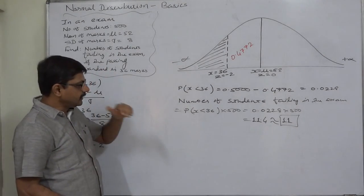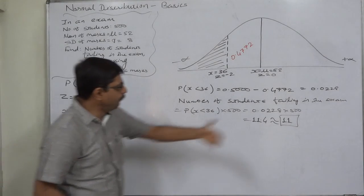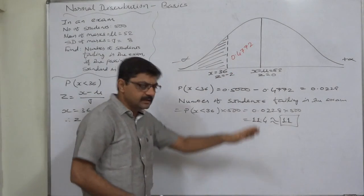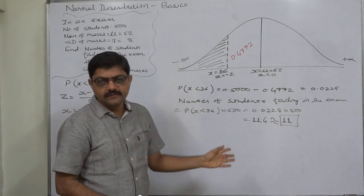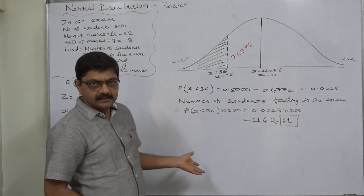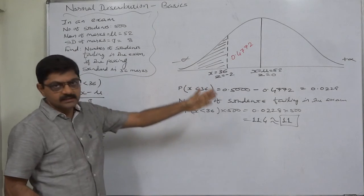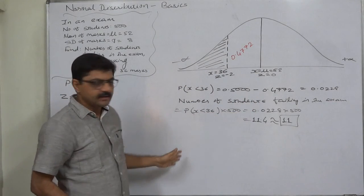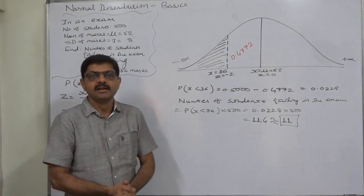If the passing standard moves upward, say greater than 36, the number of students failing in the exam will increase. If the passing standard decreases from 36, the number of students failing will also decrease.